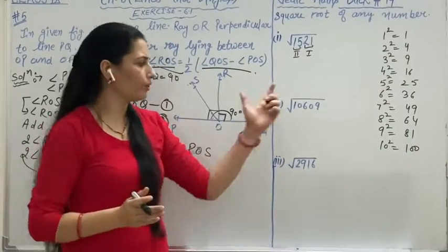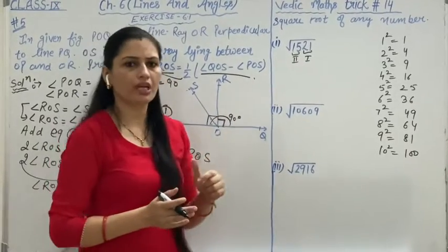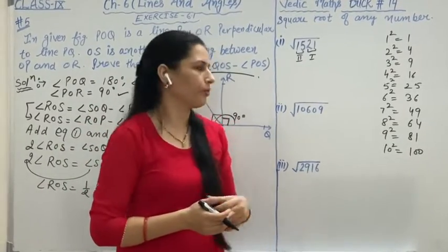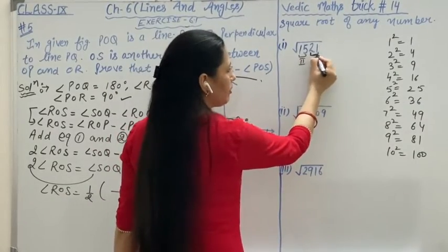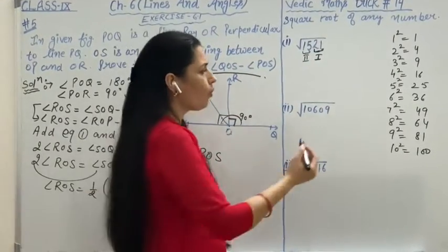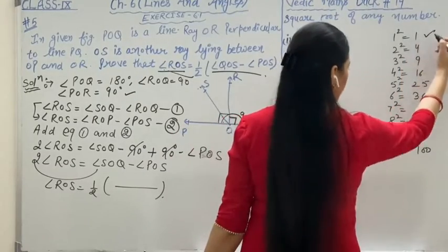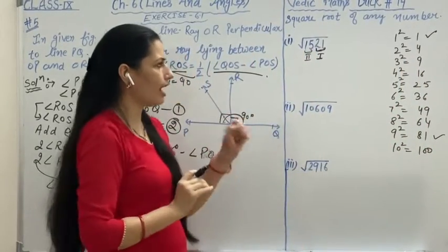We will find the square root of 1,521. First is the first part. In the square root, you have 1. You can see where 1 is coming from, 1 squared and 9 squared. So in the last, we can get 1 or 9.